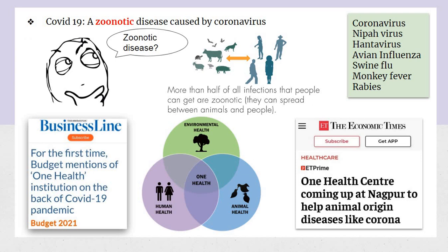COVID-19 is a zoonotic disease — meaning it transmits from animals to humans. More than half of all infections people can get are zoonotic. Examples include coronavirus, Nipah virus (from bats), Hantavirus (from rodents), influenza, swine flu (H1N1), Kyasanur Forest disease (also called monkey fever), and rabies (from dog bites).